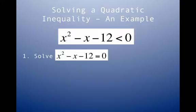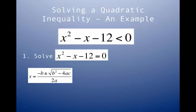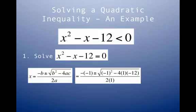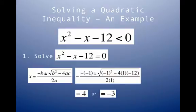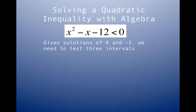Let's start with a relatively easy example: x² - x - 12 < 0. Step one, solve the quadratic equation. I'm going to use the quadratic formula: negative b plus or minus the square root of b² - 4ac, all over 2a. Plugging in a=1, b=-1, and c=-12, and simplifying, I get x = 4 or x = -3 as my x-intercepts.